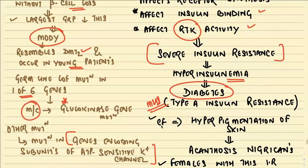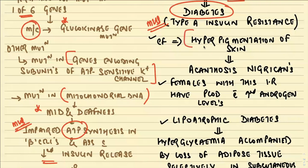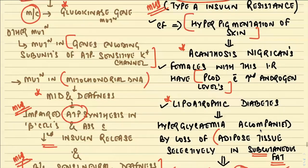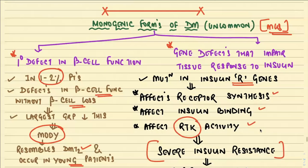Clinically, patients with Type A insulin resistance present with hyperpigmentation of the skin called acanthosis nigricans, and females have PCOD due to increased levels of androgens. Another type is lipoatrophic diabetes — hyperglycemia accompanied by selective loss of subcutaneous adipose tissue, characterized by insulin resistance, diabetes, increased triglycerides, acanthosis nigricans, and hepatic steatosis.